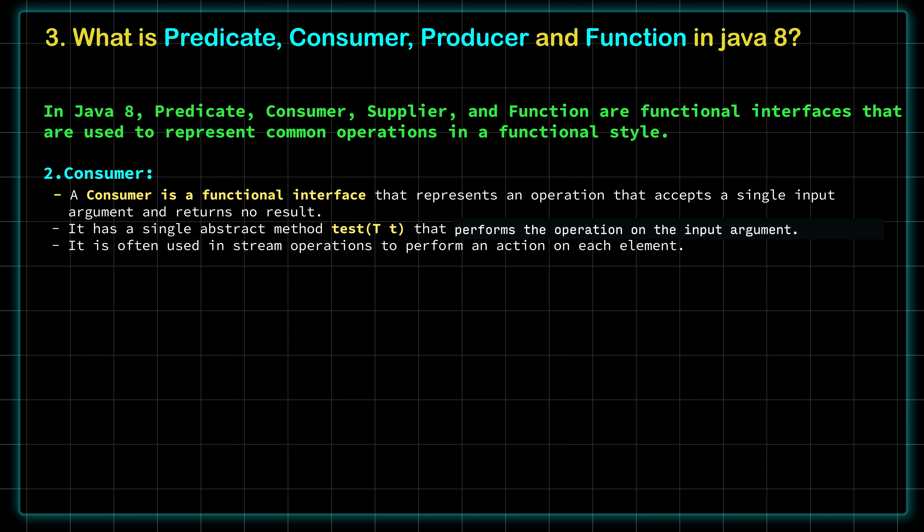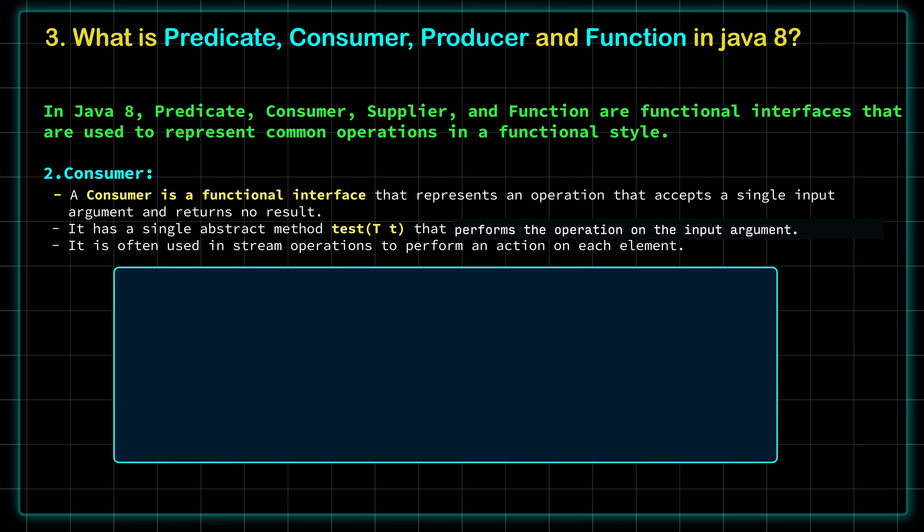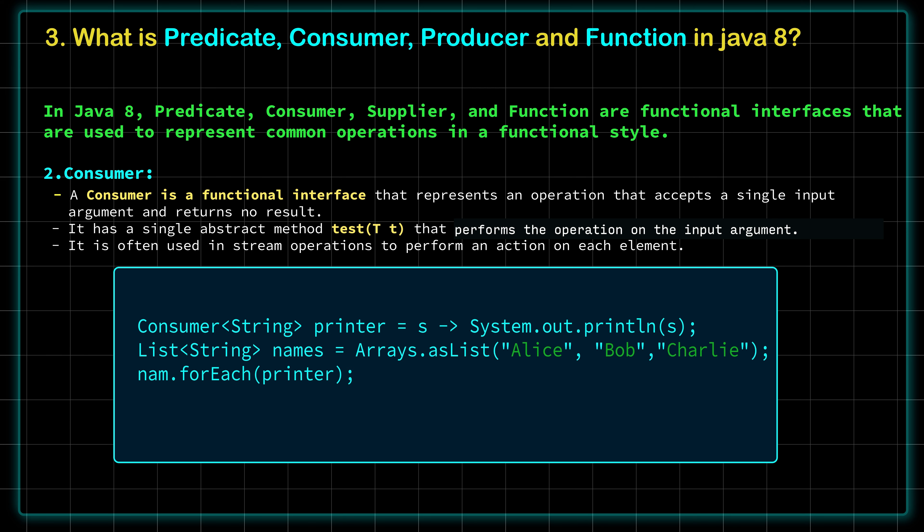Coming to Consumer — it's a functional interface which represents an operation that accepts a single input argument and returns no result. It has a single abstract method called accept() which takes a single input argument and performs an operation on it. Consumer is often used in stream operations to perform an action on each element. In the example, you can see I am iterating a list using forEach, which takes a Consumer as an argument.